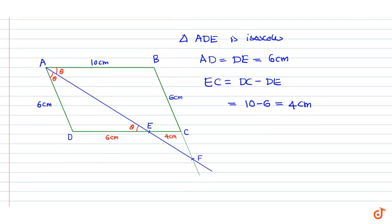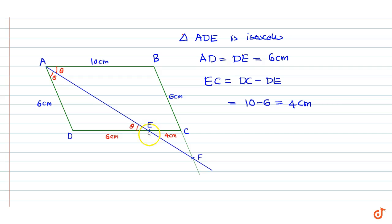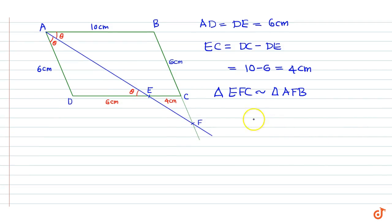Now triangle EFC and triangle AFB are similar, because there is a common angle and the sides AB and DC are parallel. Therefore triangle EFC is similar to triangle AFB, and we can say that AB by EC equals BF by CF — the ratio of corresponding sides.